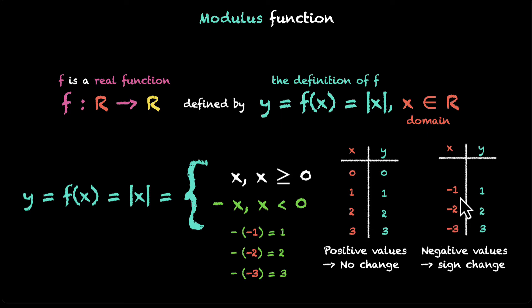Whether you put positive values or negative values, you only get positive values. This is interesting. This means that the output is never negative. All right. So we have defined the mod function. We have looked at a few examples. Now is a good time to draw the graph of y equals mod of x.